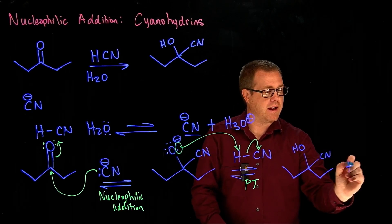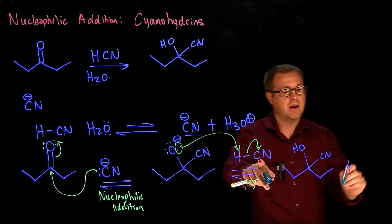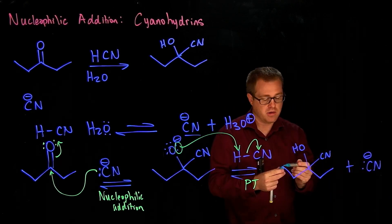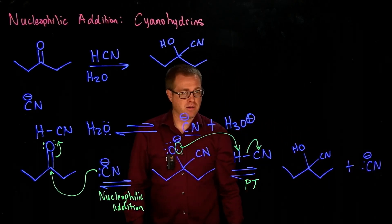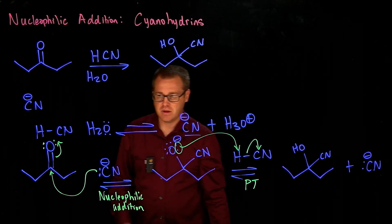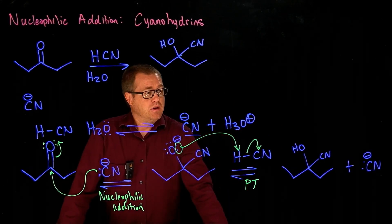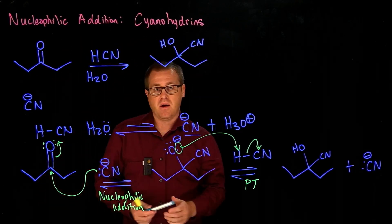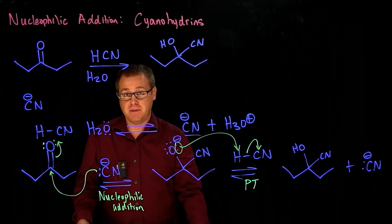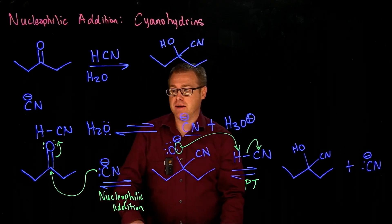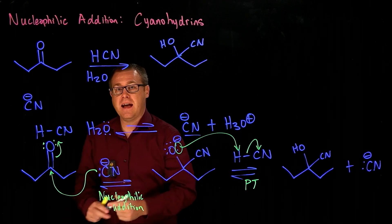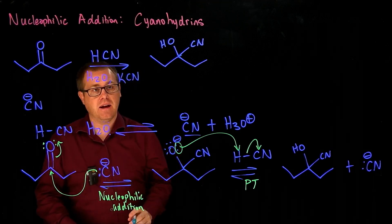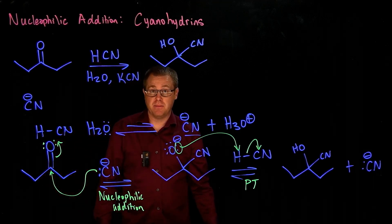But look at what else is generated, another cyanide. So that can then proceed to do another reaction. So if this reaction right here is so slow, is there a way to speed it up? And yes, there is. So you can add potassium cyanide right there, and that's going to speed up the reaction.